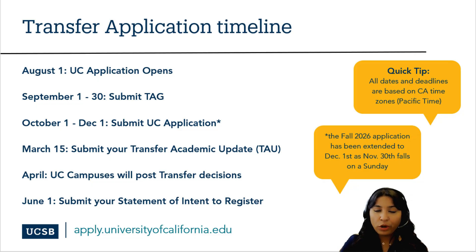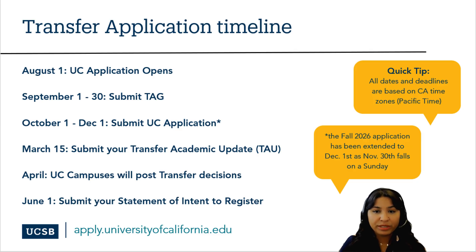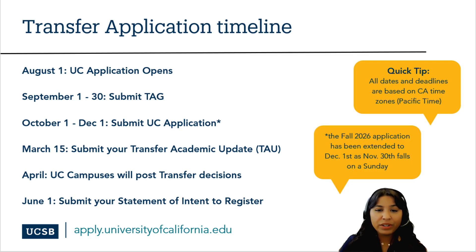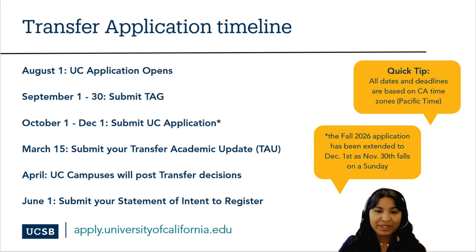The UC application opens on August 1st; however, applications may only be submitted during the fall 2026 application filing period between October 1st through December 1st. If you would like to participate in the Transfer Admission Guarantee at our campus or any of the other participating campuses, you may only submit a TAG application between September 1st and September 30th. In March, we'll ask our transfer applicants for a transfer academic update, where you'll be able to let us know how you ended off with your fall term grades and if there are any changes to your coursework. Mid to late April is when we normally release our admissions decisions. And by June 1st, we ask that you submit your statement of intent to register, letting us know if you will be attending our campus in the fall.